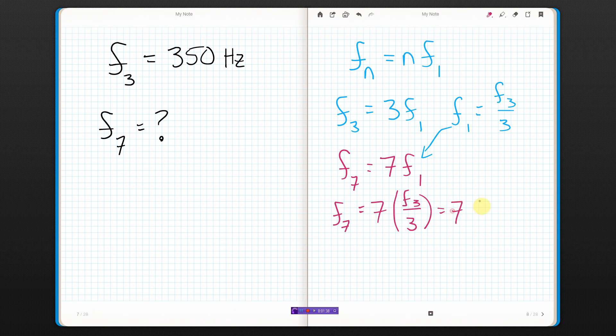I know what f3 is, so 7 times 350 hertz over 3. And I just put that in my calculator. Or if you don't have a calculator, just try to reduce it or something. And I get 817 hertz.